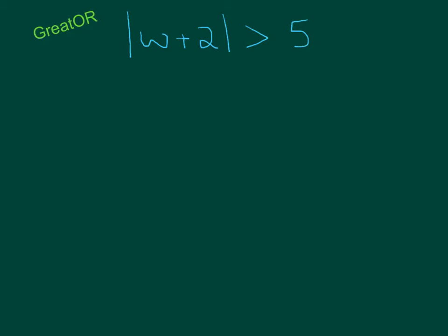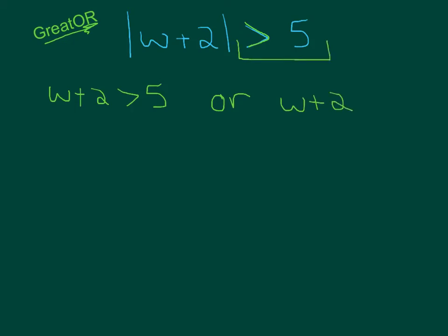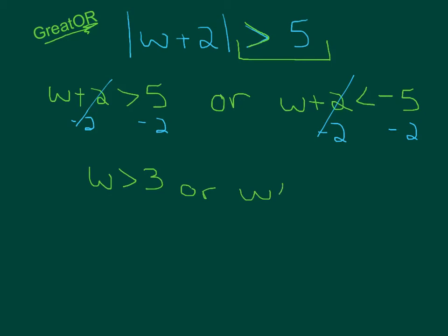Here's our next example. This time we have a greater than inequality, so we want to create an or statement. One of them, you basically rewrite what's given without the absolute value: w plus 2 greater than 5. Or, on the other one, we switch it to a less than inequality and instead of 5 we use its opposite, negative 5. So if we subtract 2 on both of these, we are left with w is greater than 3 or w is less than negative 7.